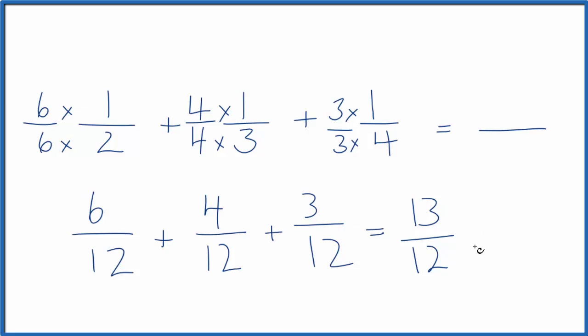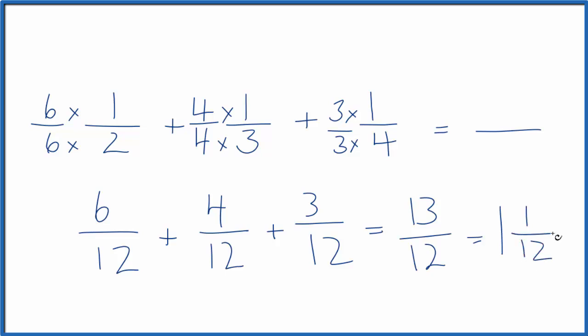And we could write this as a mixed fraction. Twelve goes into thirteen one time with one left over. So our answer here, adding these three fractions, one-half plus one-third plus one-fourth, we get thirteen-twelfths or one and one-twelfth. These are the same number here.